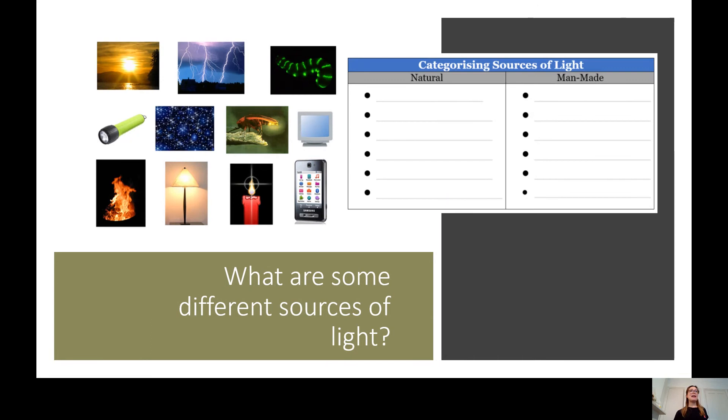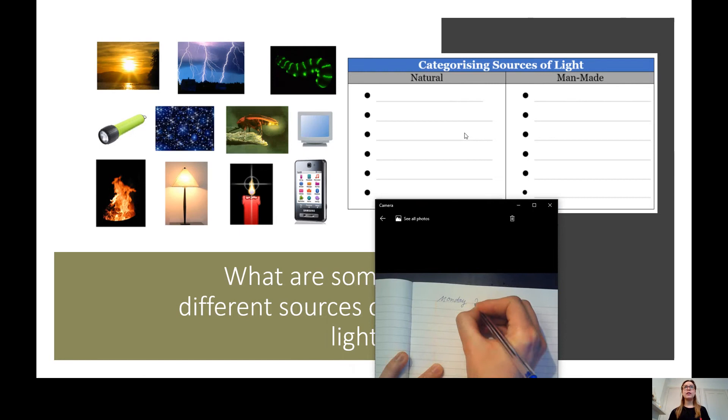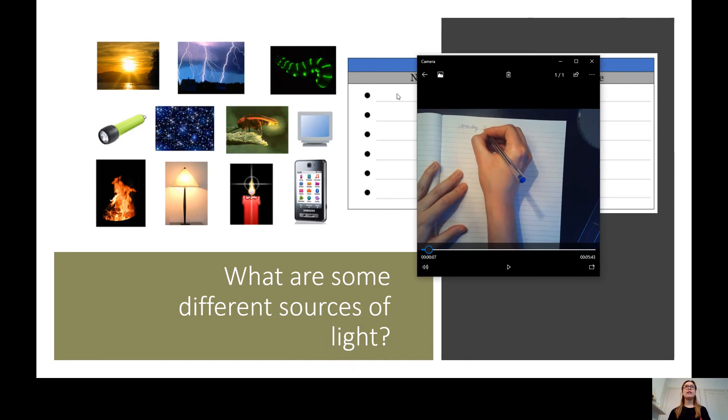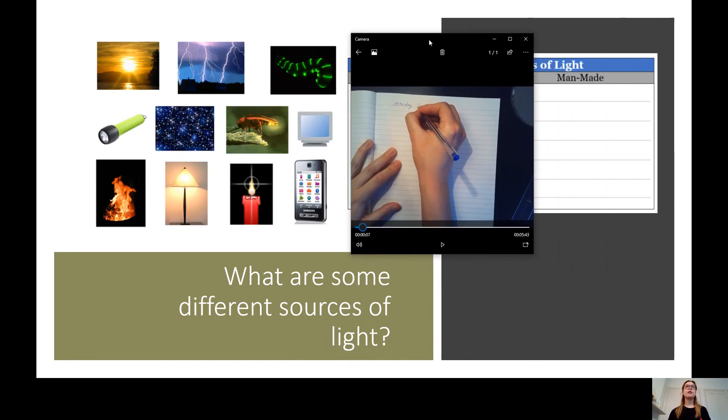Now what I would like you to do is please draw this table with two columns, natural and man-made, and then fill in each column, saying whether by putting objects in your list in these columns, saying whether they're natural, so whether they're produced by earth, naturally occurring, or whether they're made by man.